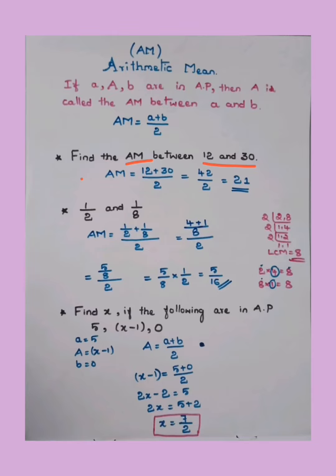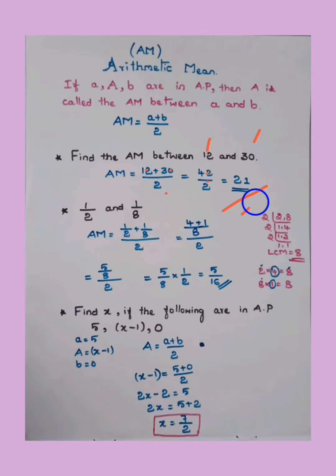We know the formula — I am not going to write it each time, so it's direct substitution. But in the exam, if it is a descriptive type question, please write the formula and then substitute. For multiple choice questions, you can directly substitute. Here a = 12, b = 30. Substituting: (30 + 12) / 2 = 42 / 2 = 21. The arithmetic mean is 21.